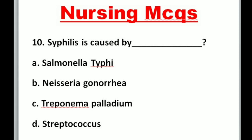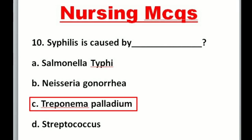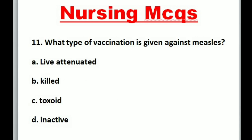Question 10: Syphilis is caused by — A. Salmonella typhi, B. Neisseria gonorrhea, C. Treponema pallidum, D. Streptococcus. Correct option is C: Treponema pallidum.